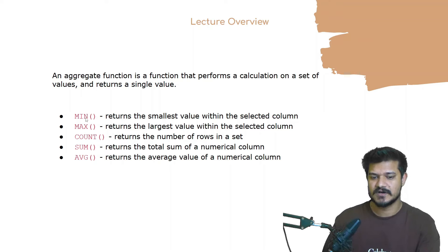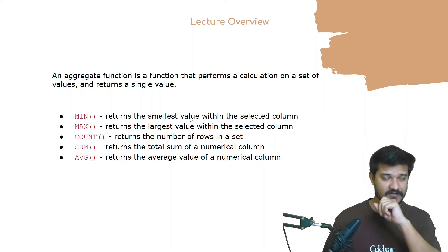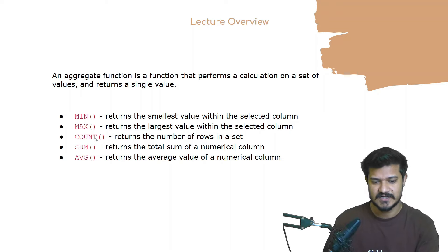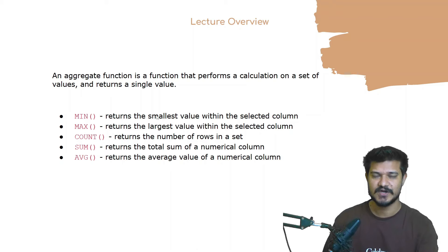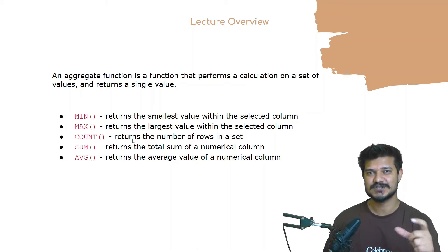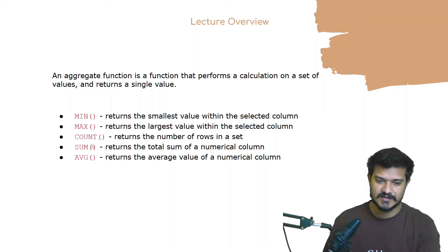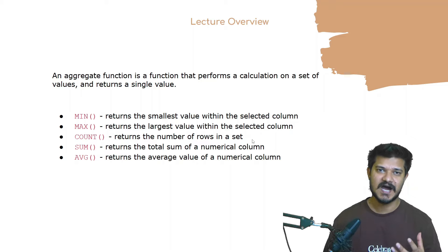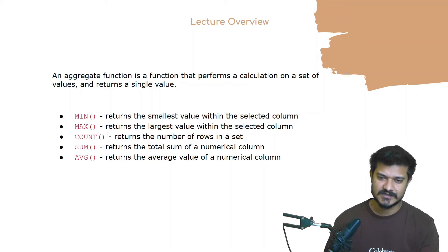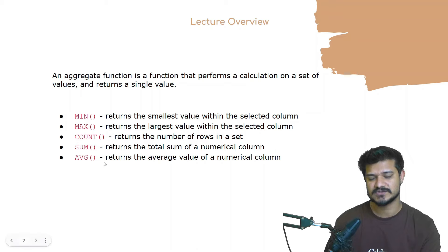Min returns the minimum value from the set, and max returns the maximum value. Count counts the total number of rows that satisfy the condition set by the WHERE clause. If no condition is set, it returns the count of all rows. Sum calculates the sum of a particular column, and average calculates the average. We'll go through each of these functions with examples so you understand how they are used.